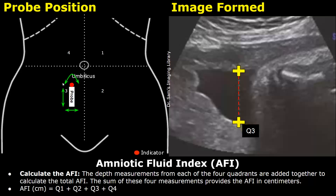Now move to the third quadrant, which is the right lower quadrant. You can move in a clockwise manner. Look for an amniotic fluid pocket and take the measurement in the third quadrant.